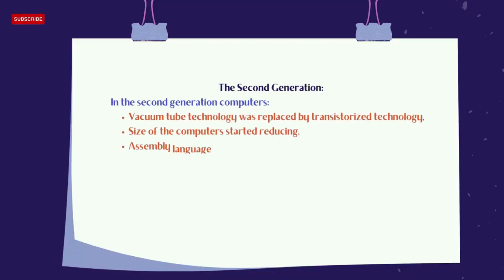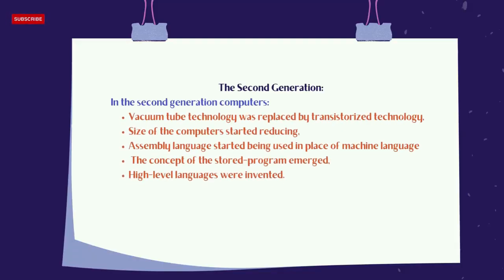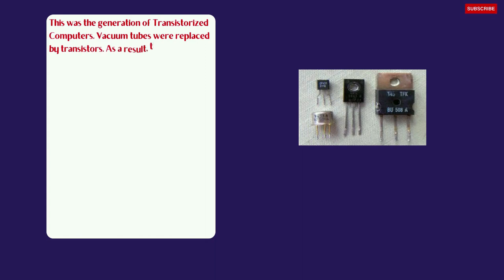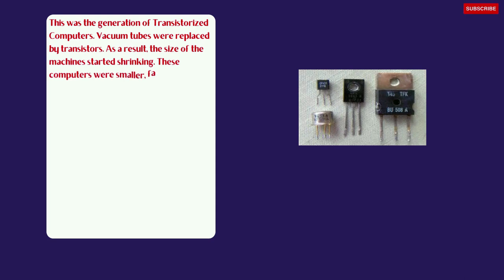The second generation. In the second generation computers, vacuum tube technology was replaced by transistorized technology. The size of the computers started reducing, assembly language started being used in place of machine language, and the concept of the stored program emerged. High-level languages were invented. This was the generation of transistorized computers — vacuum tubes were replaced by transistors. As a result, the size of the machines started shrinking. These computers were smaller, faster, more reliable, and more energy efficient.